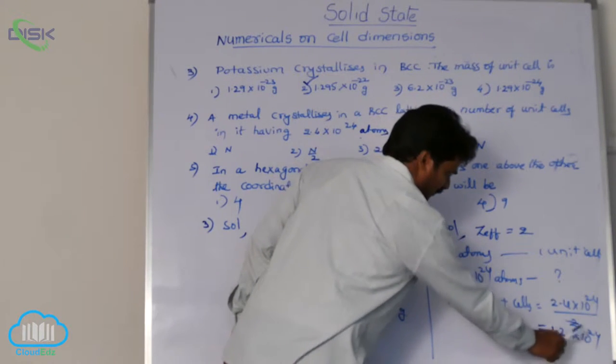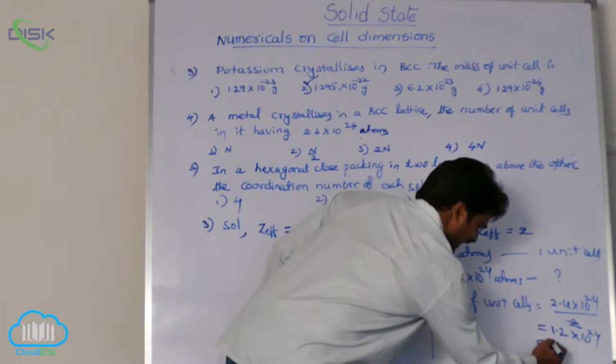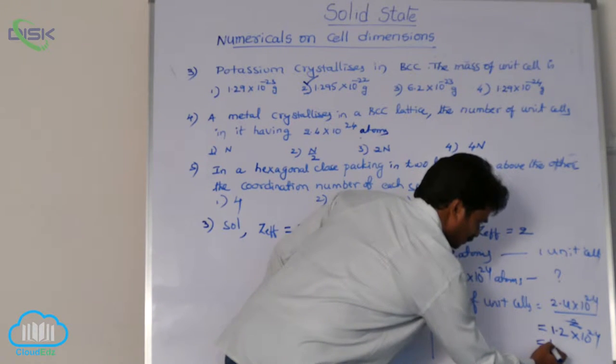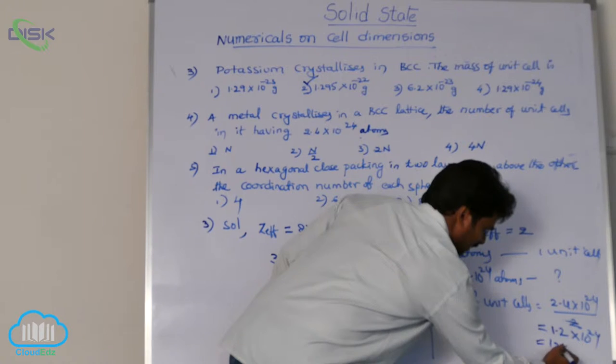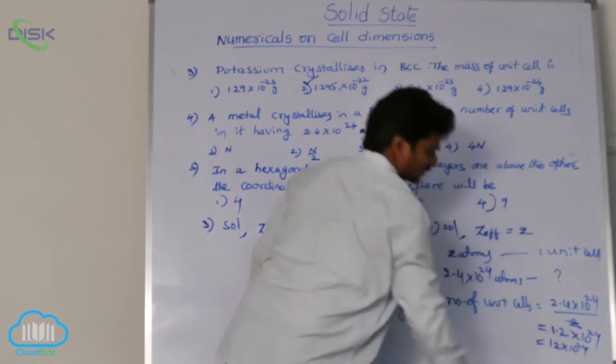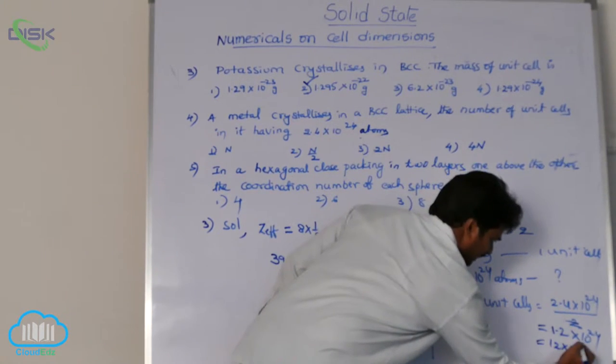This 2 into 2.4, 1.2 times, we can write it as 12 into 10 power 23.